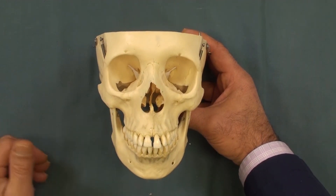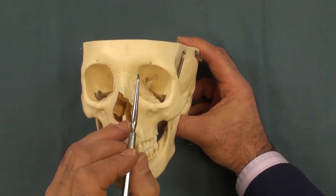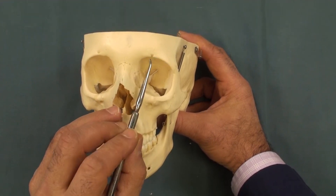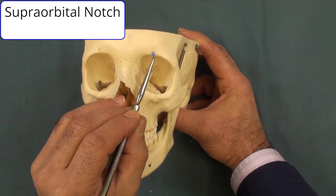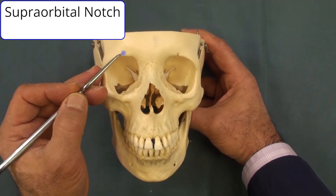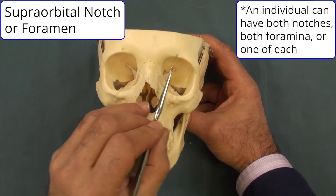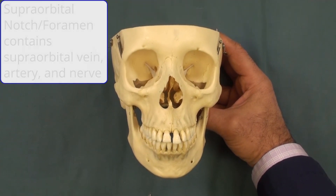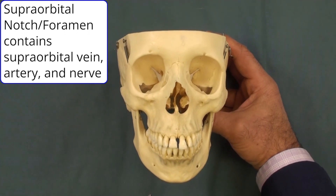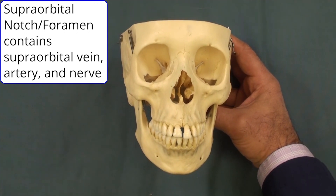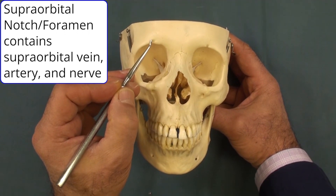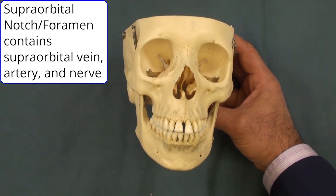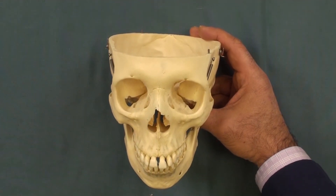In the superior orbital margin, on one side there is a supraorbital notch, while on the other side there is a supraorbital foramen — this is a normal anatomical variation. The terminal branches of V1, the supraorbital nerve, as well as the supraorbital artery and vein, pass through this opening. Similarly, infraorbital structures pass through the infraorbital foramen.